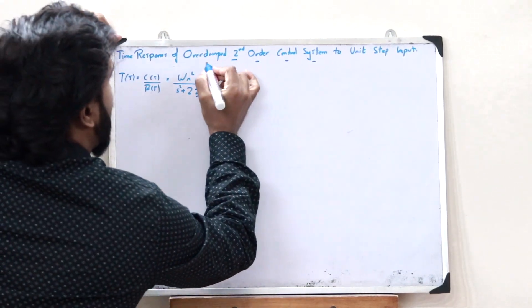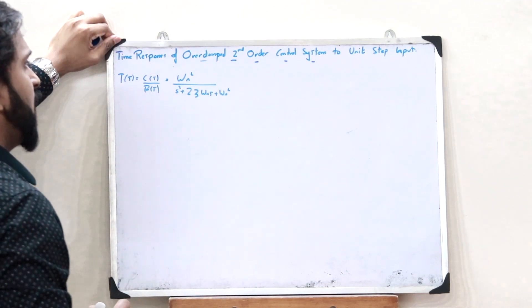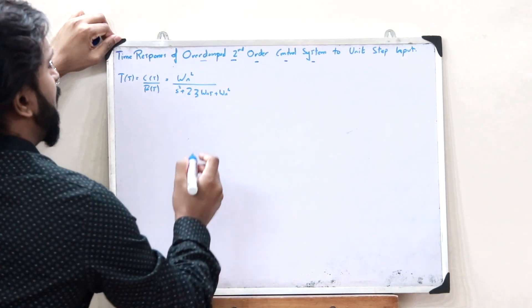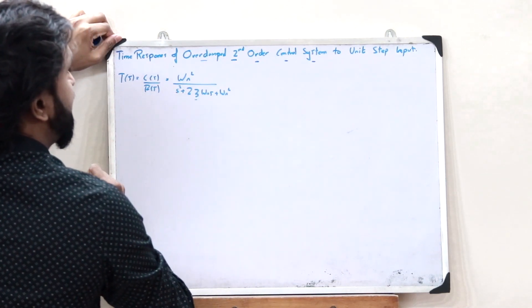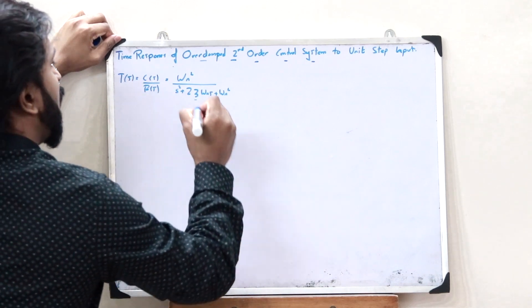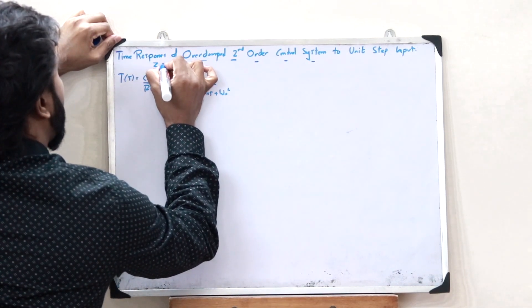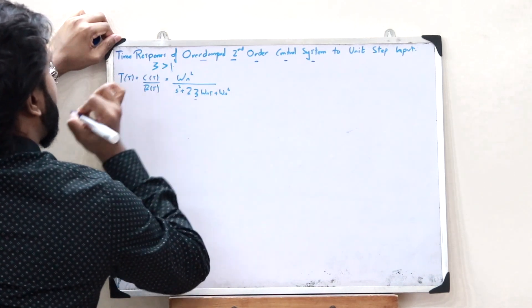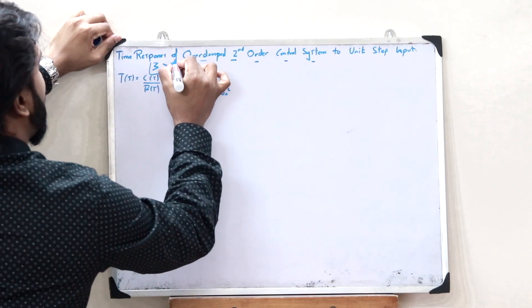In the case of an over-damped second-order control system, the value of zeta is greater than 1.